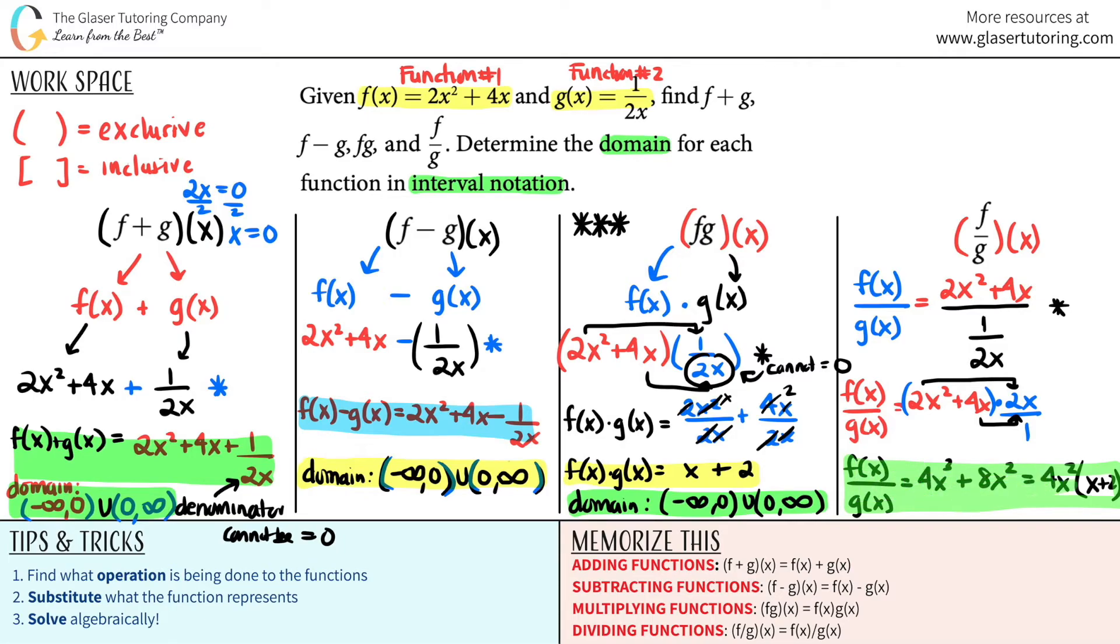And now remember, for your domains, if I just looked at this, it looks like there would be no exclusion values because this is all over 1. I could plug in any value for x here and x here and I would get no exclusion values. But always go back to the beginning. This was originally divided by a fraction. This is a denominator. So you can't have this being equal to 0. In this case, I'm just going to put it over here.